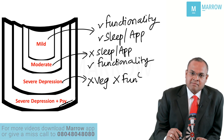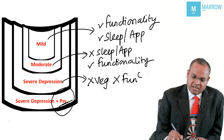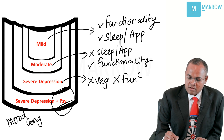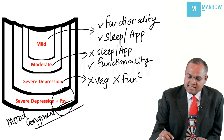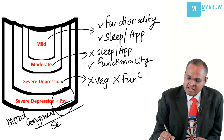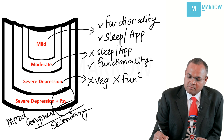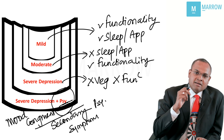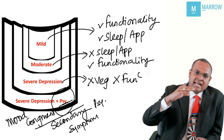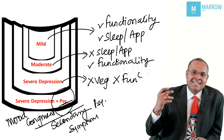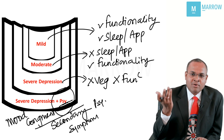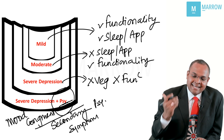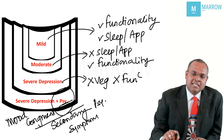Severe depression with psychotic symptoms involves what we call mood congruent or secondary psychotic symptoms. Because they are feeling very very sad over a period of time, they might start hearing voices saying things like 'go and jump and die, why are you alive, why are you eating your food?' Such mood congruent or secondary psychotic symptoms are classically seen in patients with severe depression.